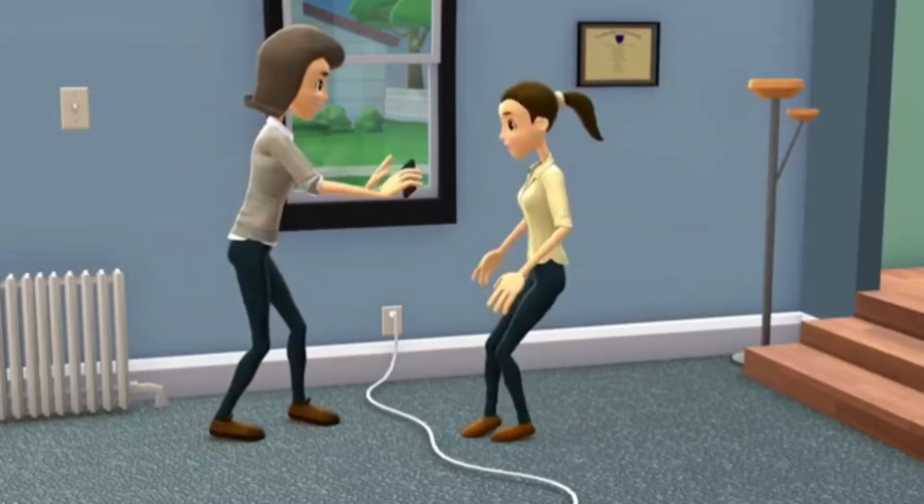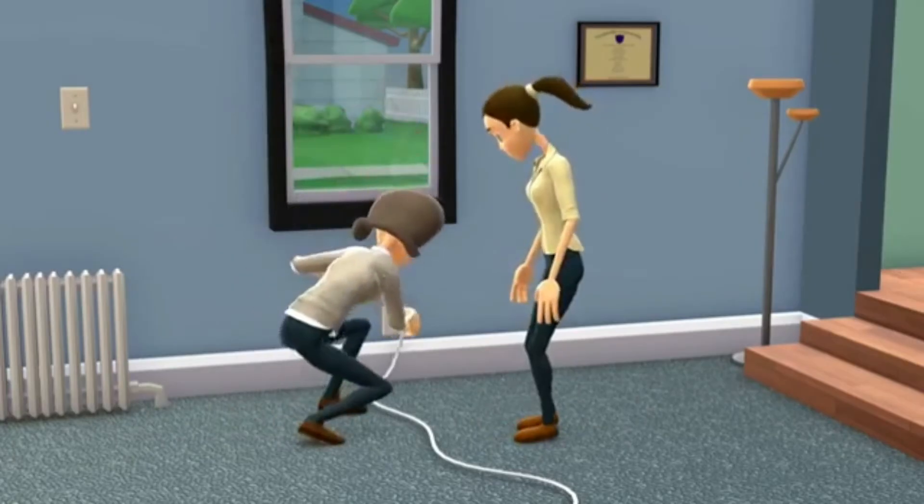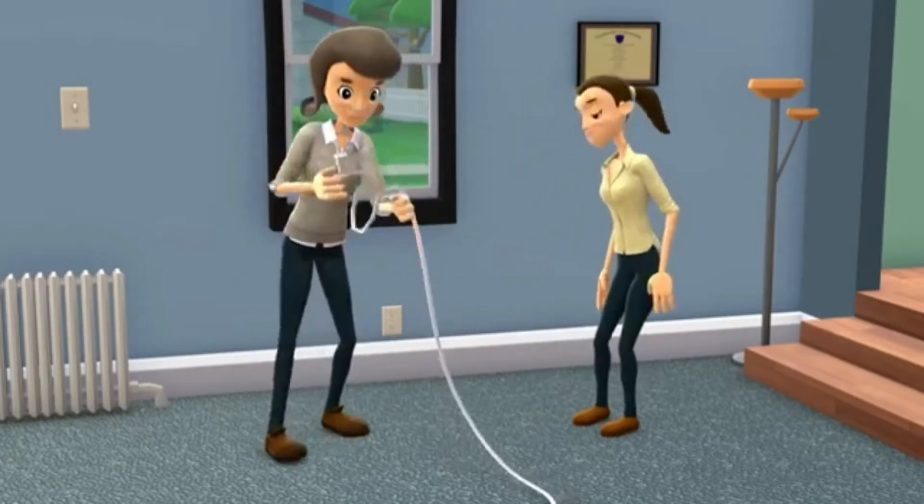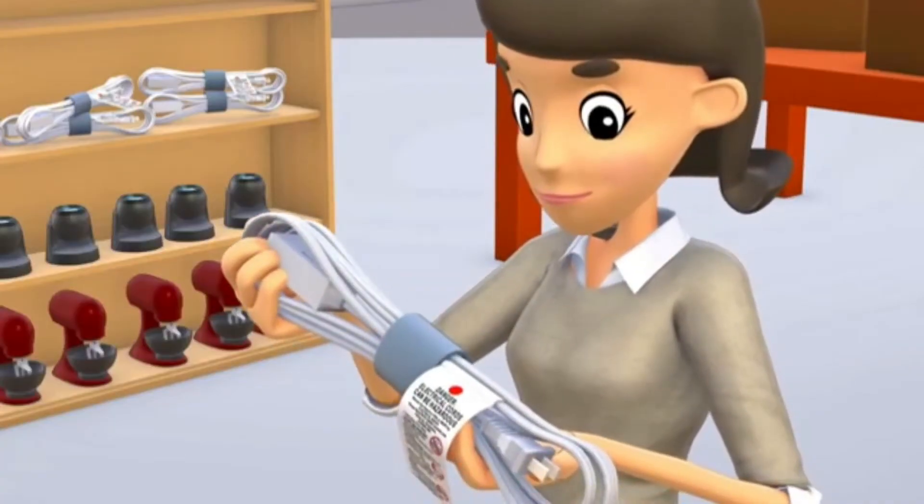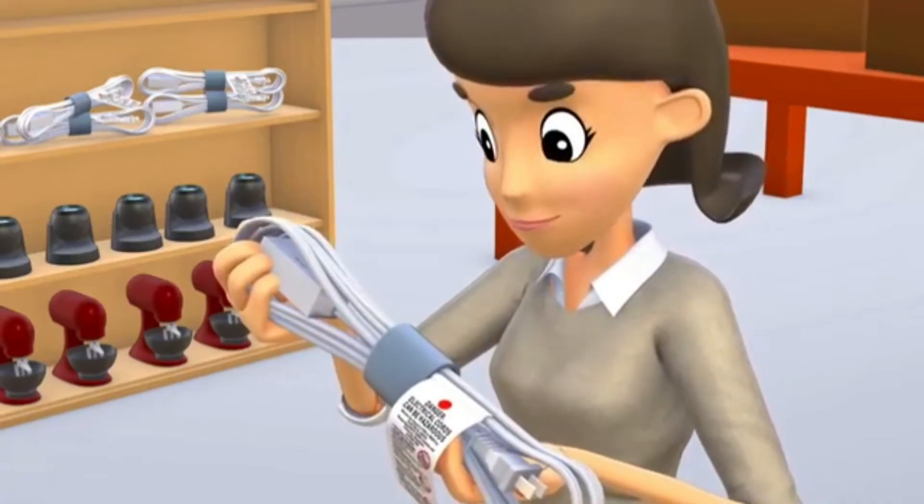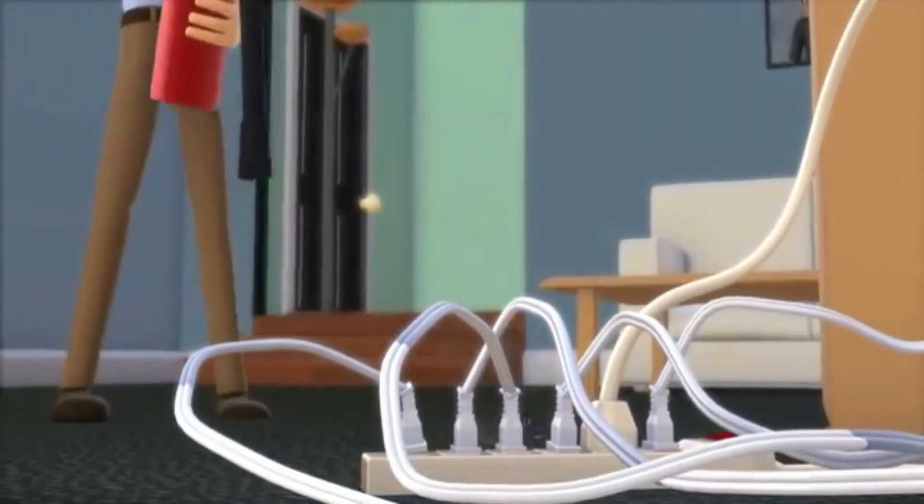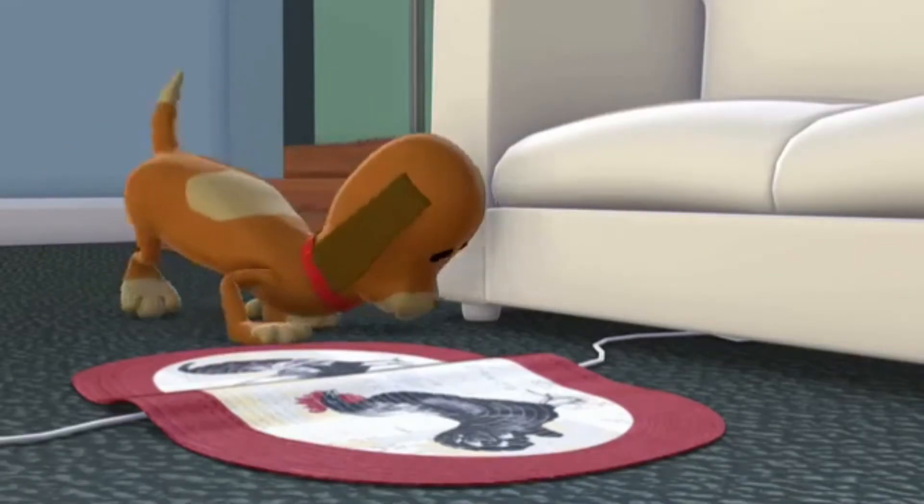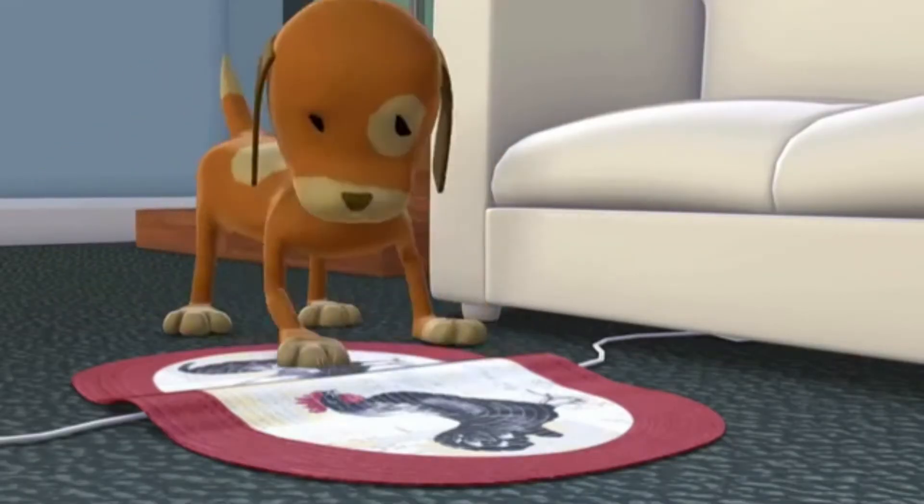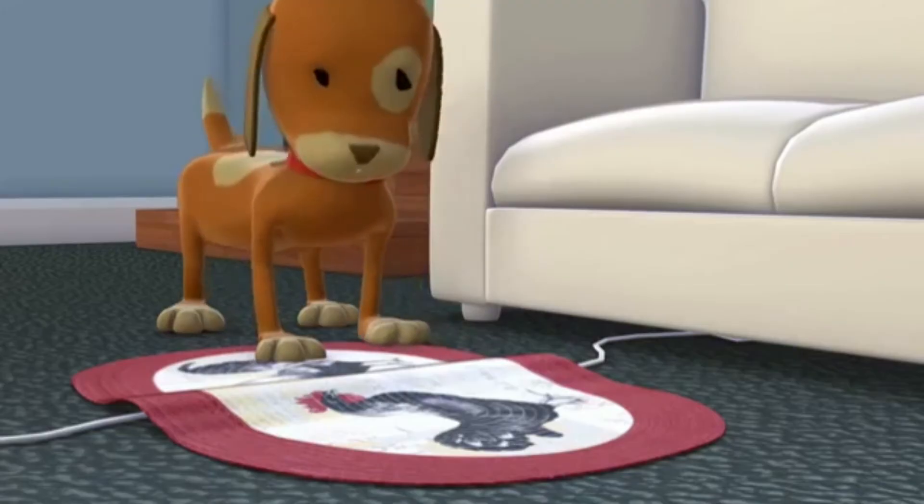Check all electric cords for visible damage and make sure cords are out of traffic areas. Check that extension cords are correctly rated for the amount of electricity needed. Never overload a cord with more than it can handle. To avoid excessive wear, ensure that cords don't run under rugs or furniture. Damaged cords can be dangerous.